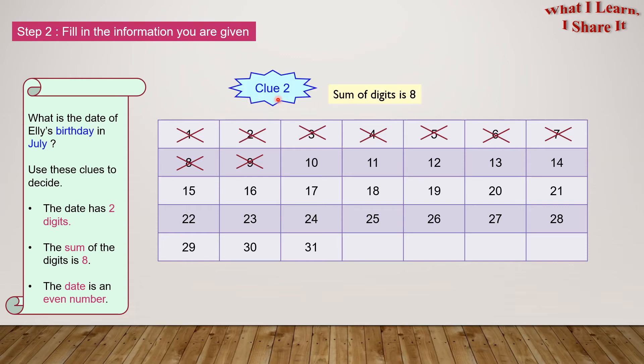Clue 2: The sum of the digits is 8. 1 plus 0 is 1. 1 plus 1 is 2. Let's see. Aha! 1 plus 7 is 8. 1 plus 8 is 9. Aha! 2 plus 6 is 8. Nothing else.